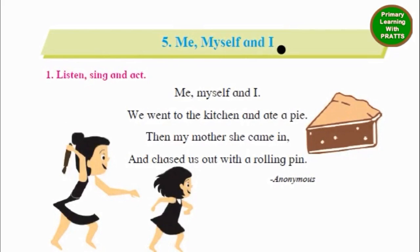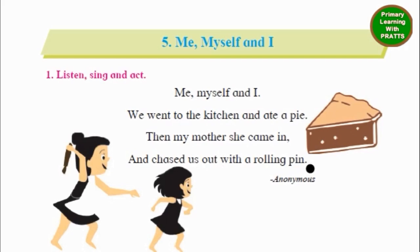Me, Myself and I. We went to the kitchen and ate a pie. Then my mother, she came in, and chased us out with a rolling pin. Written by anonymous — means we don't know who has written it, so we say anonymous.